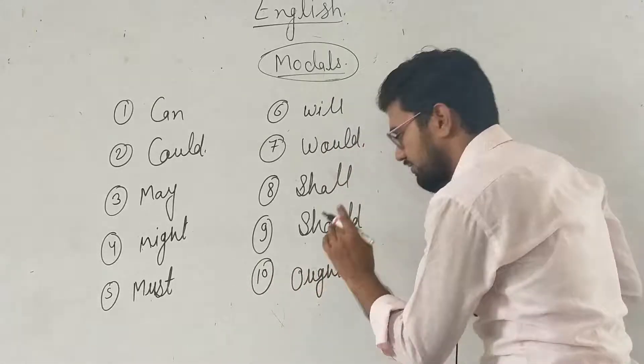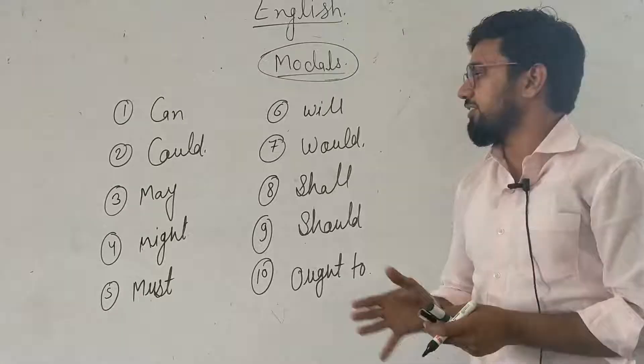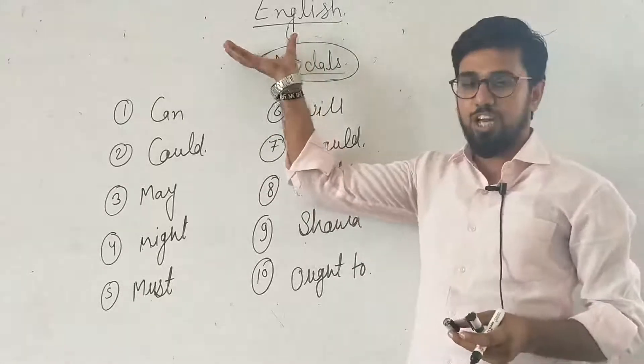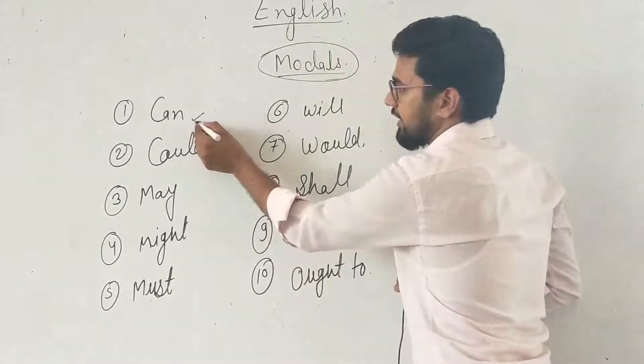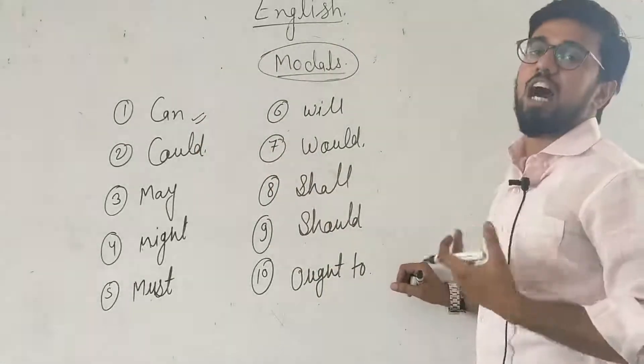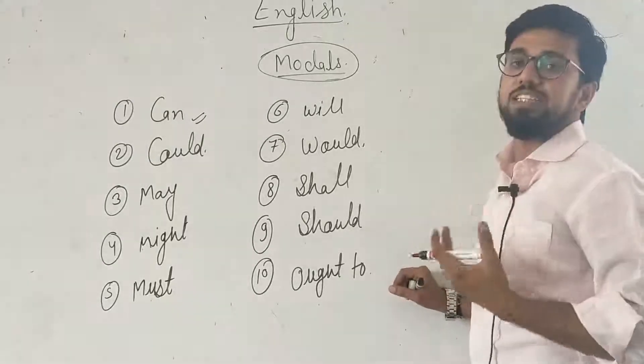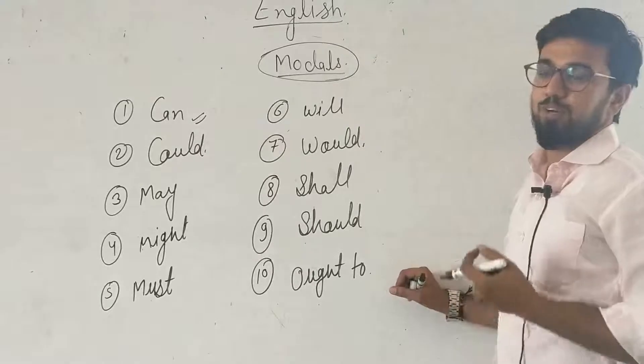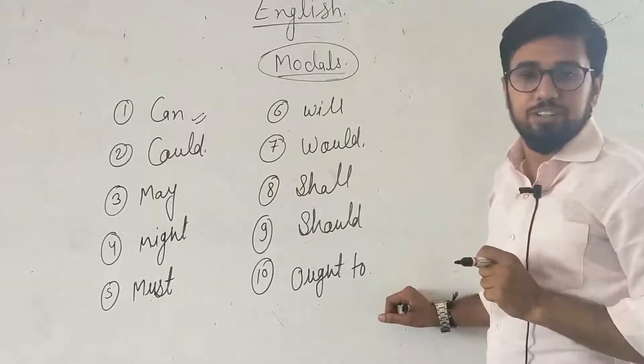And the last one is ought to. These are the major models that we use in English grammar. So today we will discuss about can, what are the uses, how can we use can in sentences as per the correctness of the grammar.